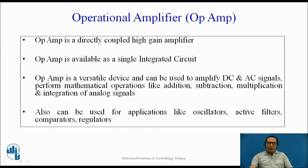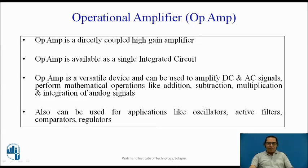As we already know, an operational amplifier, which is also popularly called as an op-amp, is a directly coupled high-gain amplifier. It is available as a single chip or integrated circuit. It is a very versatile device and it can be used for amplifying DC as well as AC signals. It can also be used for numerous applications to perform mathematical operations like addition, subtraction, multiplication, and integration on analog circuits. It can also be used for designing oscillators, active filters, comparators, regulators, and many more.